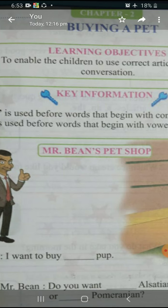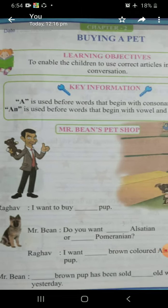You can remember that vowels are A, E, I, O, U. So we will put here A. Okay, come on to the next fill in the blanks: Mr. Bean, do you want dash Alsatian or dash Pomeranian?